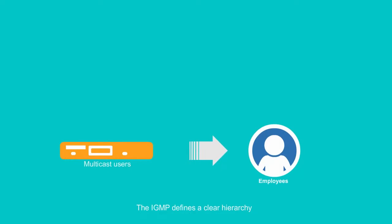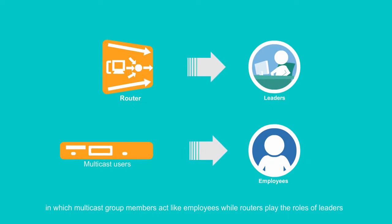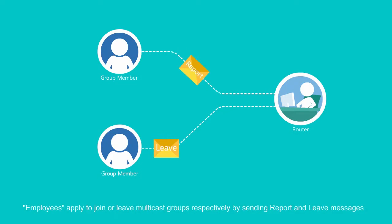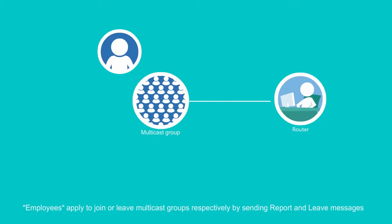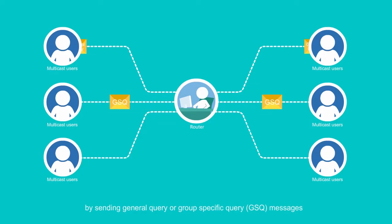IGMP defines a clear hierarchy in which multicast group members act like employees while routers play the roles of leaders. Employees apply to join or leave multicast groups by sending report and leave messages respectively. Leaders check the online status of multicast group members by sending general query or group-specific query messages.